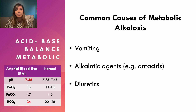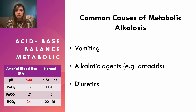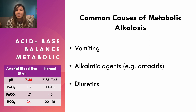For metabolic alkalosis, the bicarbonate increases and causes the blood to become alkaline. Vomiting is one of the more common reasons — you lose stomach acid, and the blood moves the acidic portion back into the stomach, making the blood more alkaline. Patients taking antacids or diuretics are the other common causes.